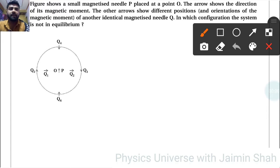Figure shows a small magnetized needle P placed at a point O. The arrow shows the direction of its magnetic moment. The other arrows show different positions and orientations of the magnetic moment of another identical magnetized needle Q. In which configuration is the system not in equilibrium?